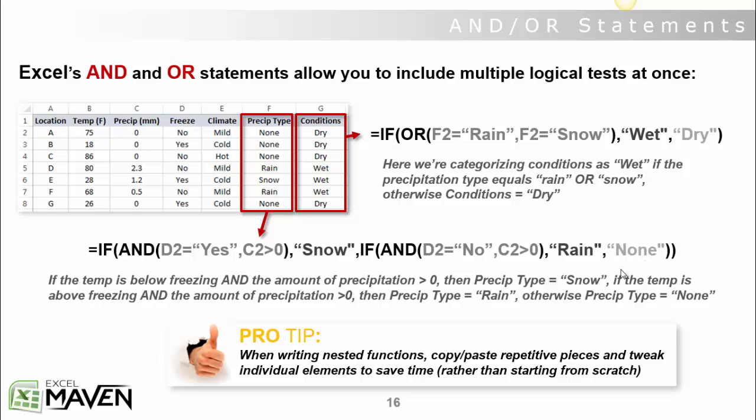Now what if we wanted to create an additional field called conditions that are either equal to wet or dry, and the conditions are just based on precipitation. So if precipitation is none, we know that the conditions are going to be dry no matter what. If the precipitation type is rain, conditions are wet. But if the precipitation type is snow, the conditions will also be wet.